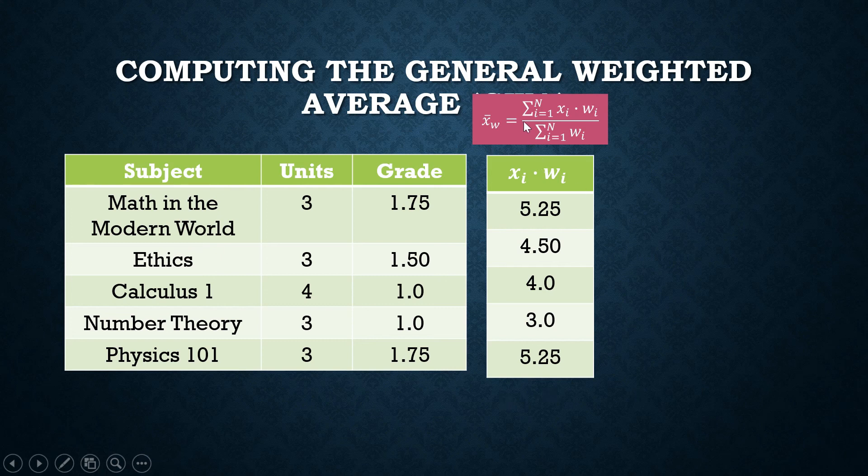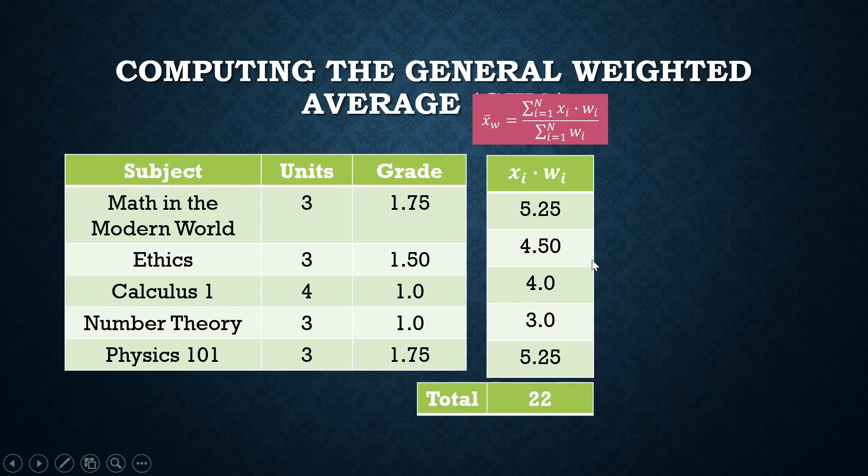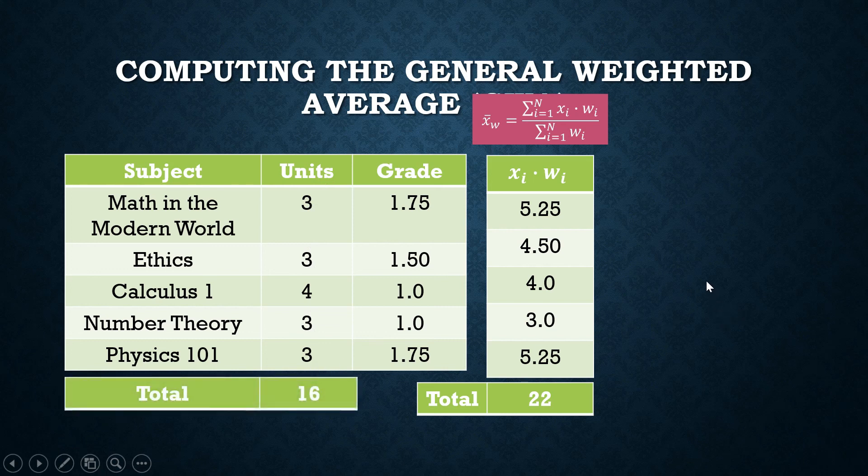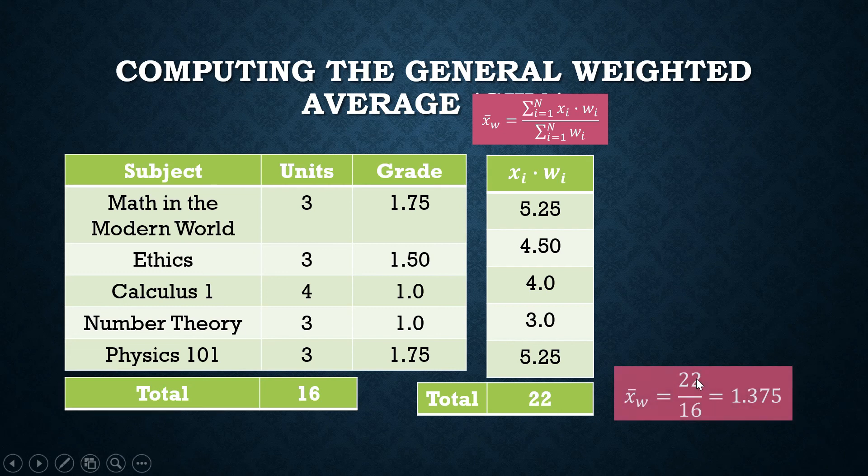And then you will get the sum. That's the meaning of summation of x sub i times w sub i. You will obtain the sum of all these numbers in this column. And the sum is 22. How about the denominator? Summation of w sub i. That's the sum of all the units. It's equal to 16. What is your GWA? Your general weighted average, also your general weighted mean. The general weighted mean of your grades is going to be 22 over 16 or 1.375.